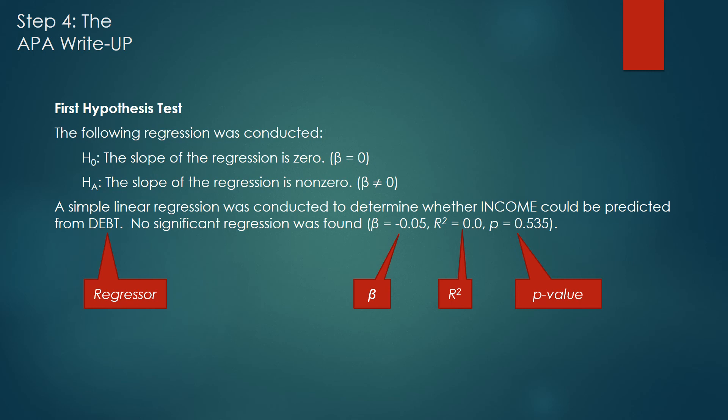We found that income could not be predicted using debt, because there was no significant regression. As you can see, all the way at the very end of the sentence, I have a parenthetical comment containing beta, r-squared, and p in that order.